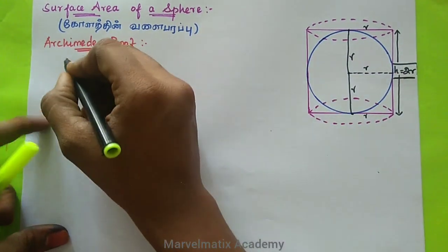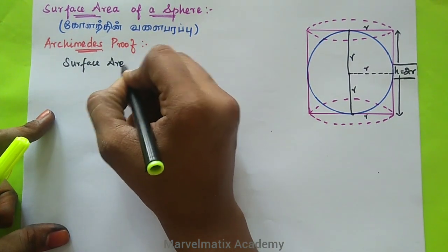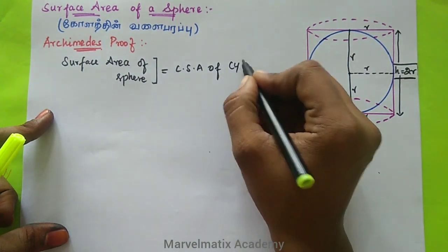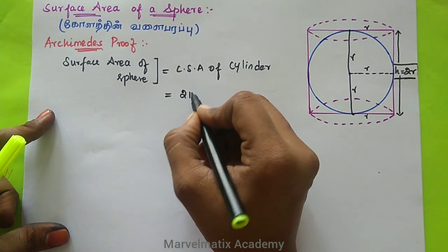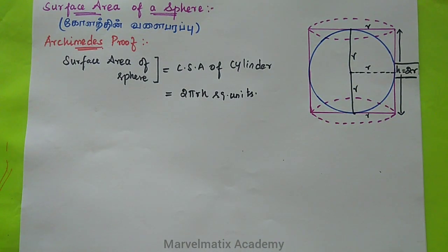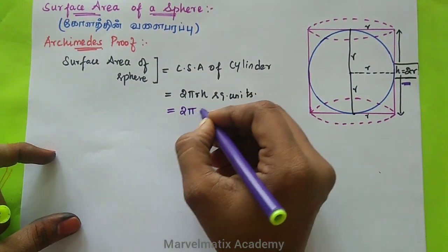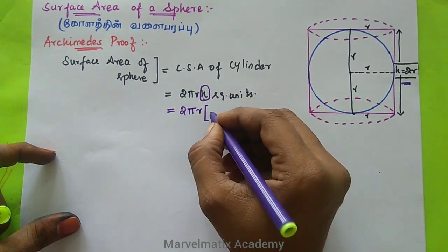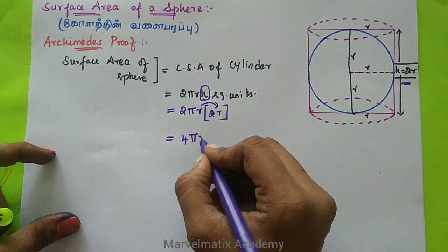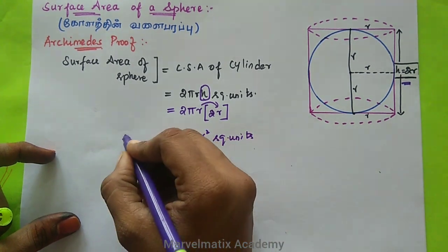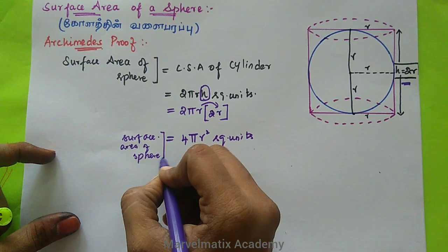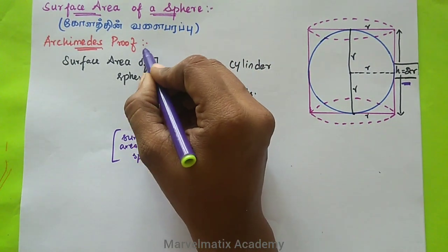2R is equal to 2R. Then the sphere is equal to 2R. Surface area of sphere: CSA of cylinder is equal to 2πR square units — this is the formula. So if we do 2R × 2πR × 2R, that gives us 2π × 2R × 2R = 4πR square units. Surface area of sphere. So this is the surface area formula with R — committee proof. Okay, envelope.